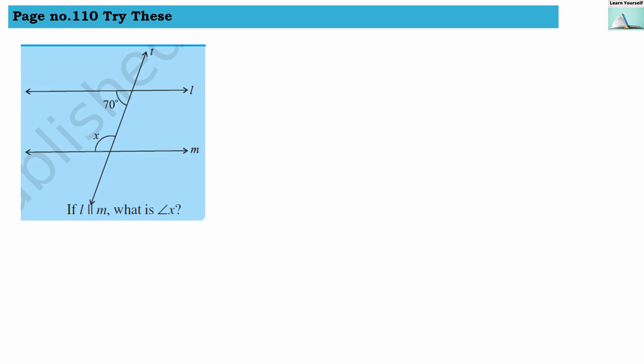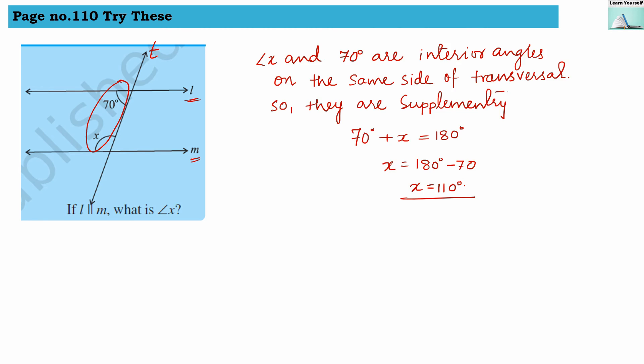Third example: x and 70 degrees. Here two lines are there, lines l and m, with t as our transversal. You can see that 70 degrees and x are both interior angles on the same side of the transversal, so they are supplementary. We can write our answer: Yes, l is parallel to m because angle x and 70 degrees are supplementary.